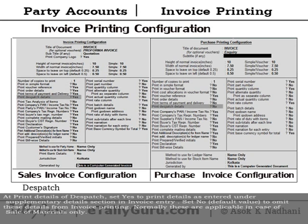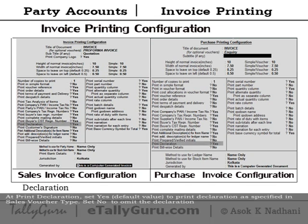Declaration. At print declaration, set yes — the default value — to print the declaration as specified in the sales voucher type. Set no to omit the declaration.